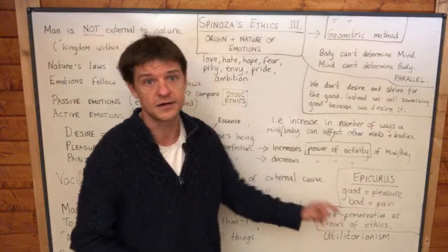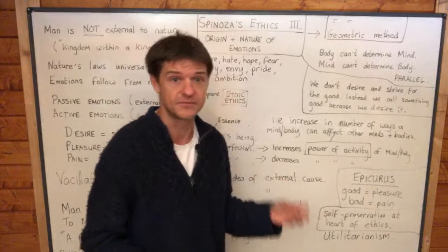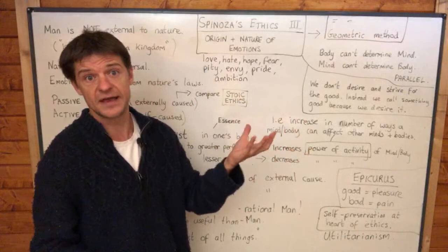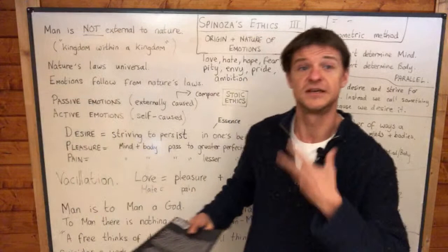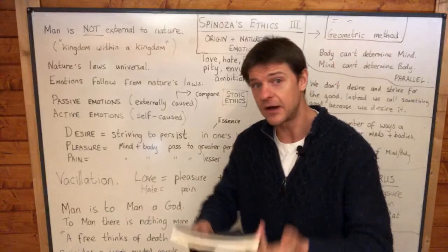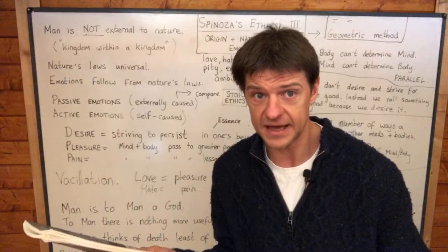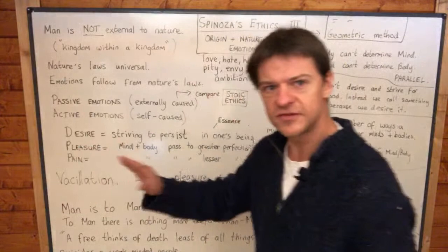Several times he talks about self-preservation being the essence of man, and this being the good for man. For any man, it's good for him to persevere in his own being, to persist, to survive, to keep going. And of course, he's not just talking about man — he's talking about all the other things out there which have minds and bodies. So all of the animal kingdom he's talking about as well. Desire is one of the three primary emotions, and it's this striving to persist in one's being.